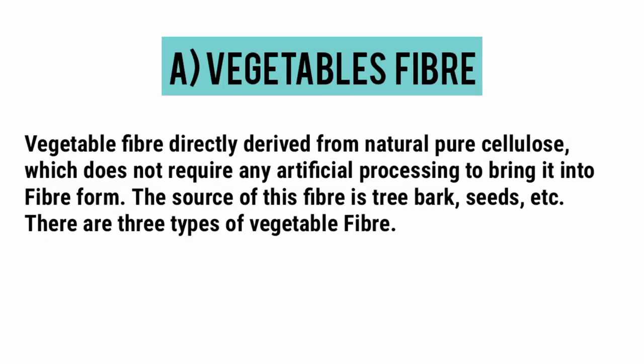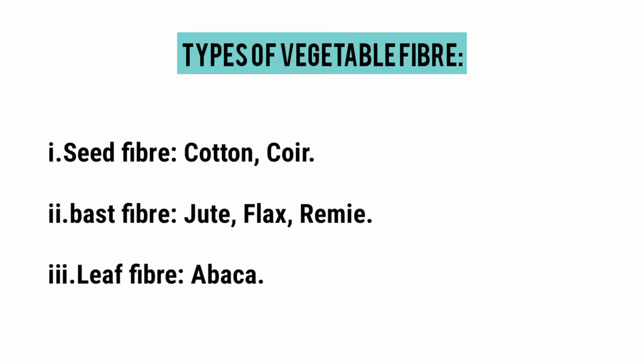Vegetable fiber is directly derived from natural pure cellulose, which does not require any artificial processing to bring it into fiber form. The source of this fiber is tree bark, seeds, etc. There are three types of vegetable fiber: 1. Seed fiber — example: cotton, coir. 2. Bast fiber — example: jute, flax, ramie. 3. Leaf fiber — example: abaca.